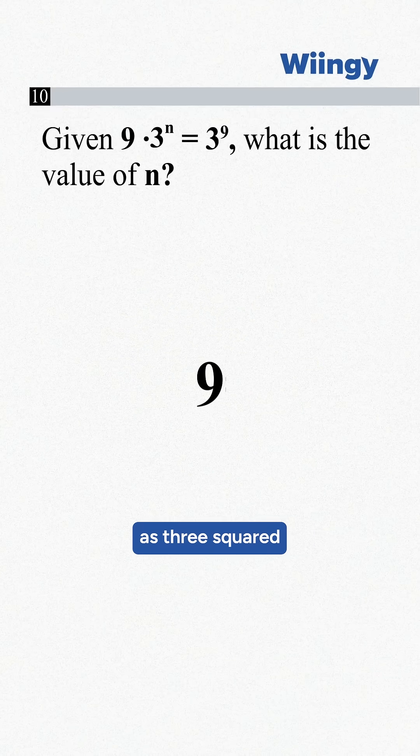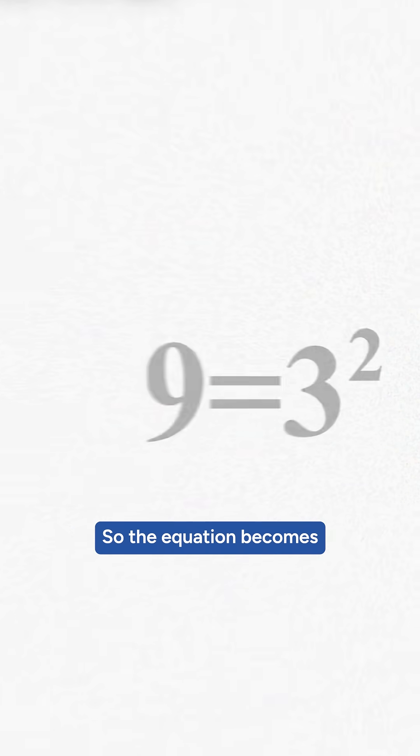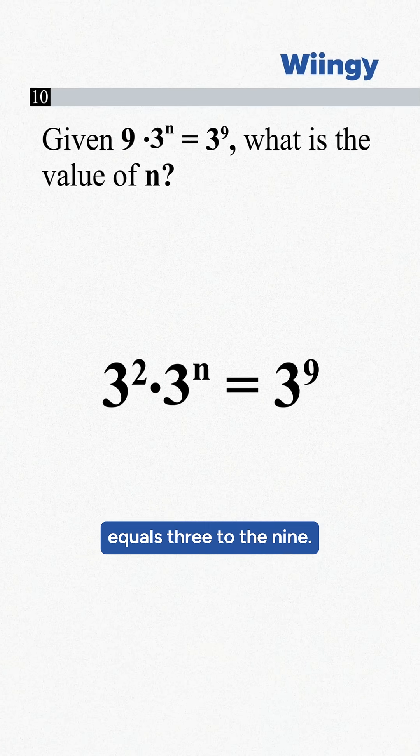We simplify 9 and write it as 3 squared so that all the terms have the same base. So the equation becomes 3 squared times 3 to the n equals 3 to the 9.